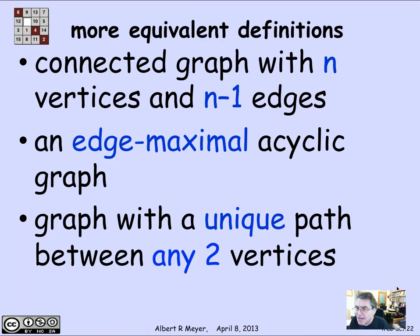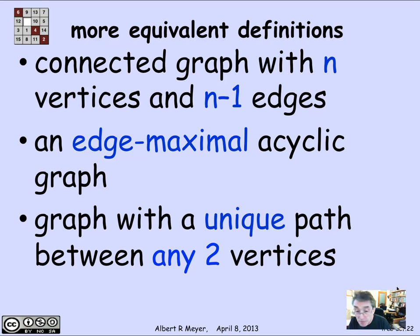Perhaps the most useful characterization is that a tree is a graph in which there is a unique path between any two vertices. If there's a unique path, all vertices are connected. What makes it a tree is that there aren't two different ways to connect any two vertices — because as soon as there were, there would be a cycle. Those are some of the basic equivalent formulations of trees, and there are more, but this is enough for today.